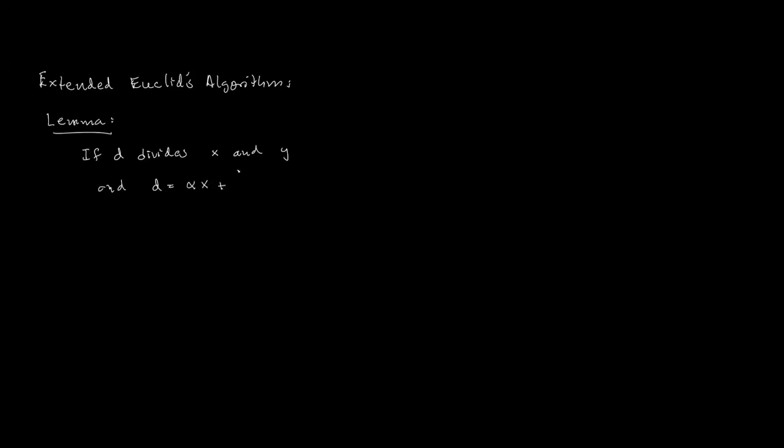Now that we know Euclid's algorithm is correct, I'll write an extension called the extended Euclid's algorithm. It's based on the following lemma: if d divides x and y (so d is a common divisor), and d equals a linear combination alpha*x plus beta*y where alpha and beta are integers (possibly negative), then d is actually the greatest common divisor of x and y.